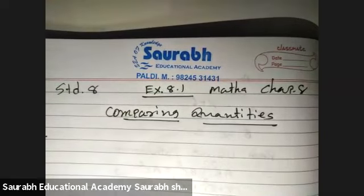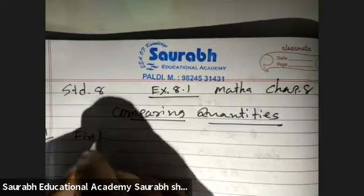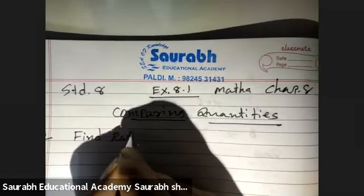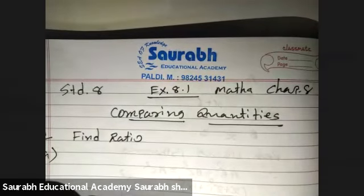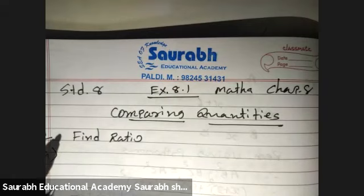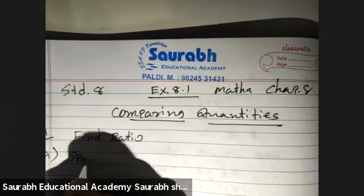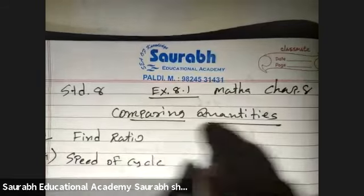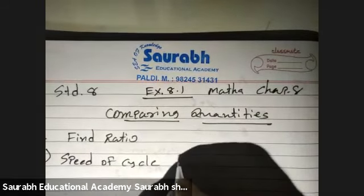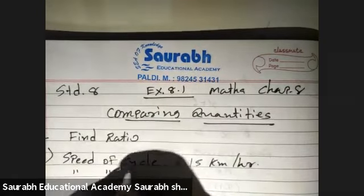Sum number first, find the ratio of the following. First question, speed of cycle 15 km per hour to the speed of scooter 30 km per hour.